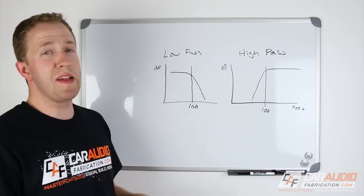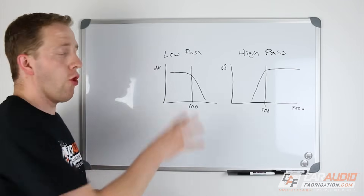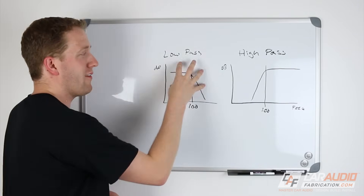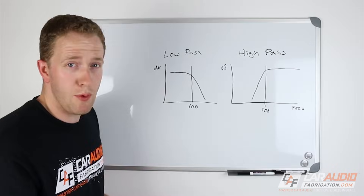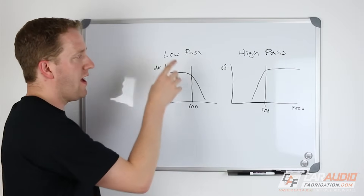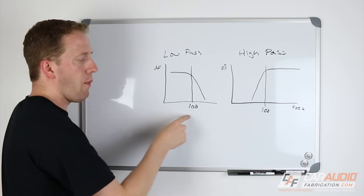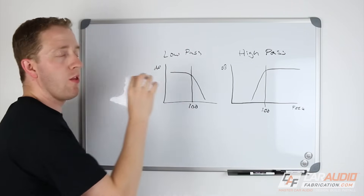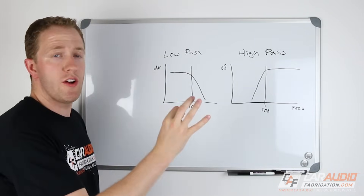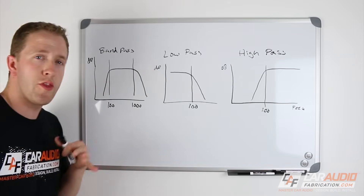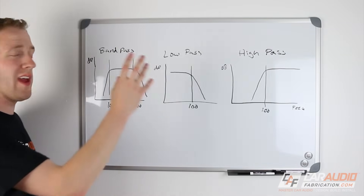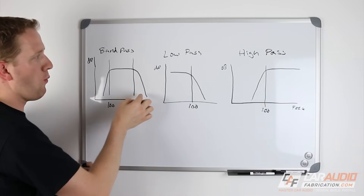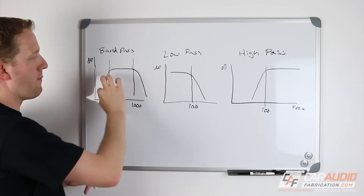The next crossover type is called a low-pass crossover. This would be on, for example, a subwoofer. We could say that our subwoofer has a low-pass crossover applied at 100 Hz — in other words, everything below 100 Hz it's going to play. Finally, our third category of crossovers is called a band-pass crossover. This is a combination of a low-pass and a high-pass crossover. In a four-speaker system with a subwoofer, mid-bass, mid-range, and tweeter, the mid-bass and mid-range speakers would use a band-pass crossover.